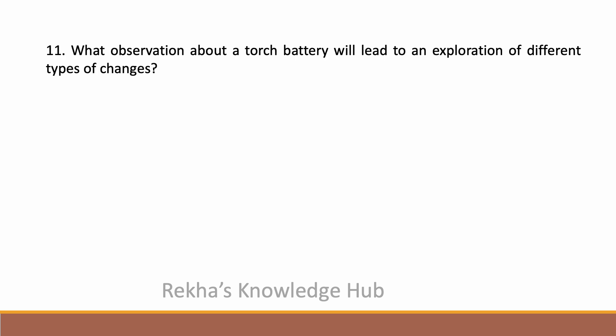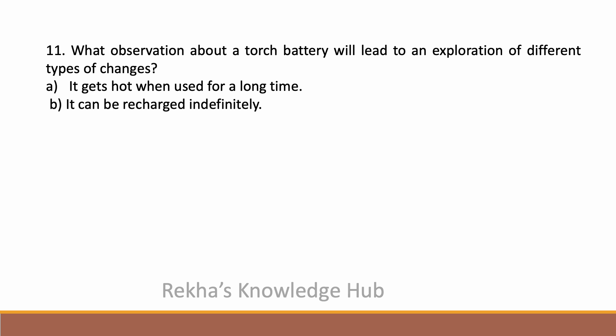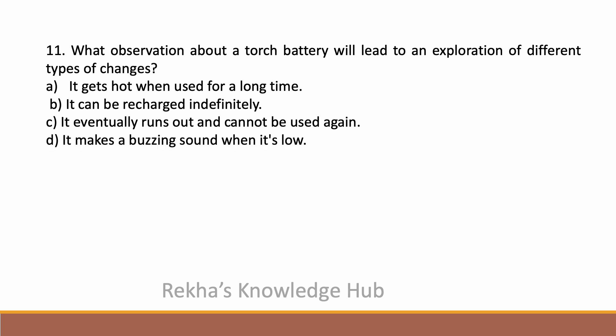What observation about a torch battery will lead to an exploration of different types of changes? Options are: it gets hot when used for a long time, it can be recharged indefinitely, it eventually runs out and cannot be used again, or it makes a buzzing sound when it is slow. The correct answer is: it eventually runs out and cannot be used again. This observation about a torch battery will lead to an exploration of different types of changes.